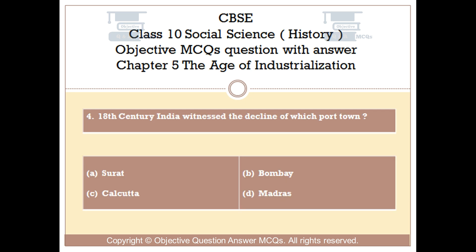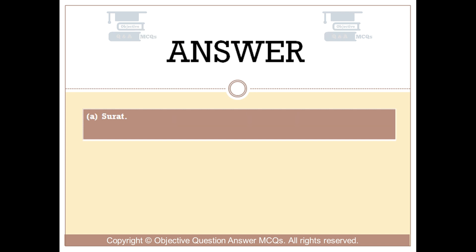Question number 4. 18th century India witnessed the decline of which port town? Option A, Surat; Option B, Bombay; Option C, Calcutta; Option D, Madras. The right answer is Option A: Surat.